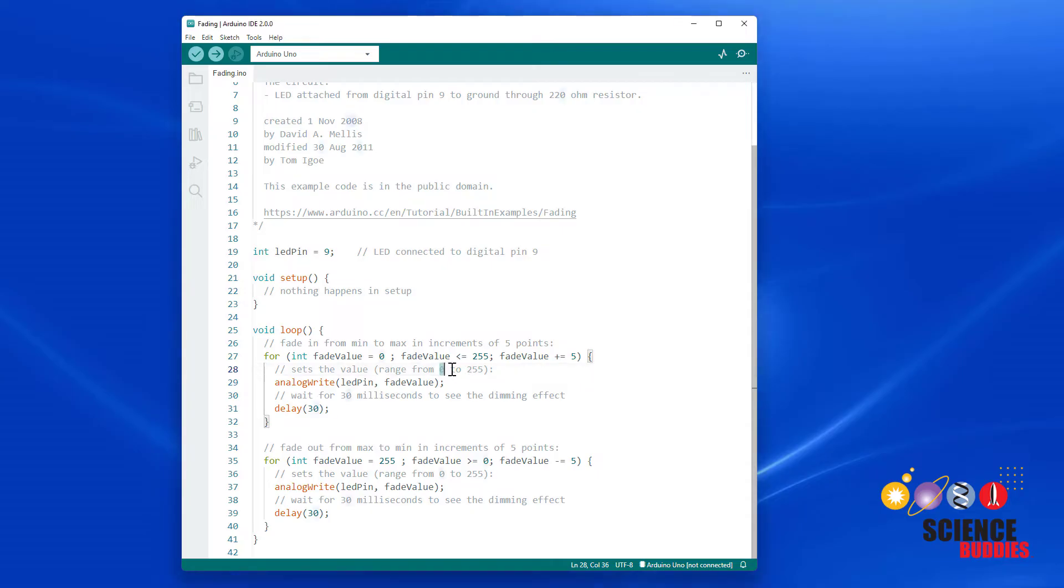If you're not familiar with binary numbers, don't worry too much about why this goes up to 255 instead of something more intuitive like a hundred. This is the biggest number that can be stored with something called an 8-bit binary number, which is how computers count using ones and zeros. You can't give the analog write command a number bigger than 255. It can't count any higher than that.